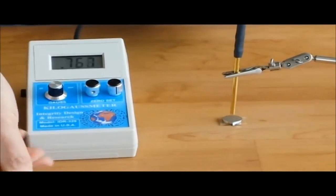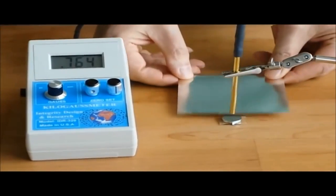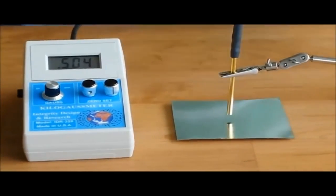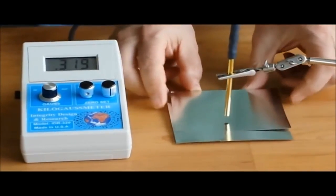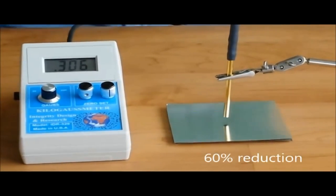Now, if instead I use a larger piece, same material, same thickness, just a larger format, one layer drops us to 505. With a second layer of magnet shield, it drops us to 306.